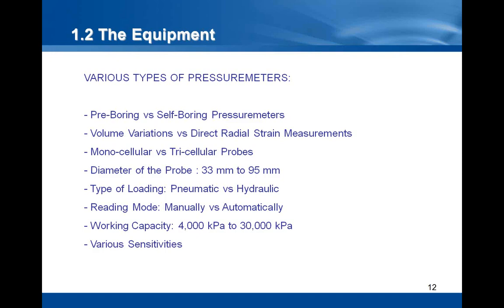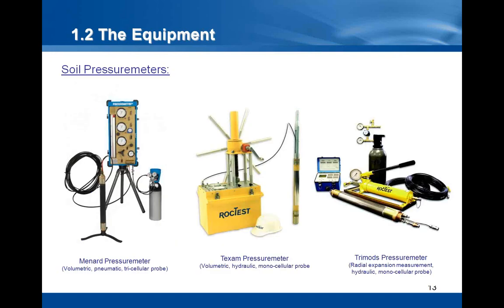Here are three examples of pressure meters. At the left, you have a Ménard pressure meter, which is based on the volumetric measurement principle. This pressure meter is pneumatically loaded and is fitted with a tricellular probe. At the right, you have the model Trimodess pressure meter. This pressure meter is based on the volumetric measurement principle. It is hydraulically loaded and is fitted with a monocellular probe.